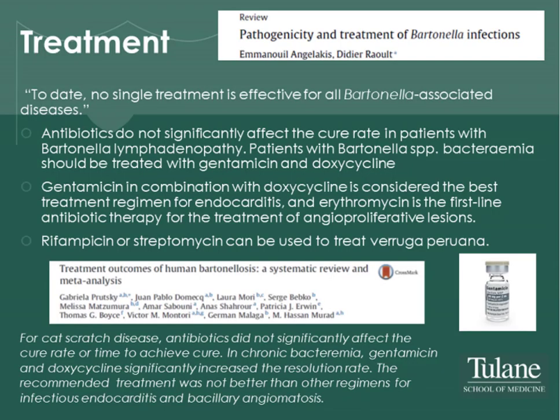To date, there has been no single treatment known to be effective for all Bartonella-associated diseases. Antibiotics don't significantly affect the cure rate in patients with Bartonella lymphadenopathy. Bartonella bacteremia should be treated with gentamicin and doxycycline in combination — considered the best treatment regimen also for endocarditis. Erythromycin is a first-line antibiotic therapy for angioproliferative lesions. Rifampicin and streptomycin have been used to treat Verruga peruana. However, a systematic review and meta-analysis showed that for cat scratch disease, antibiotics did not significantly affect cure rate or time to cure. In chronic bacteremia, gentamicin and doxycycline significantly increased resolution rate, but the recommended treatment was not better than other regimens for infectious endocarditis and bacillary angiomatosis.